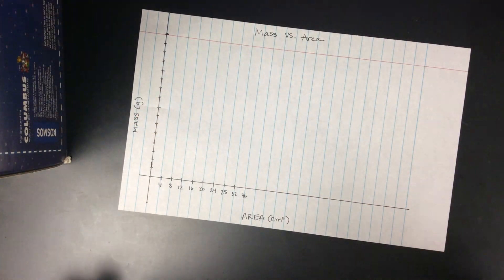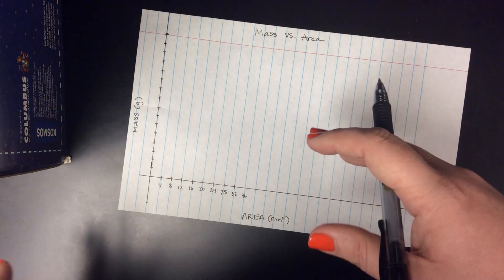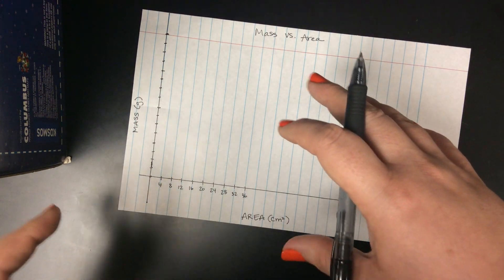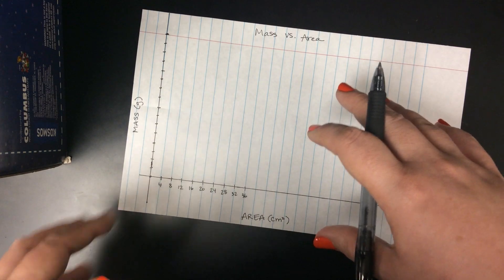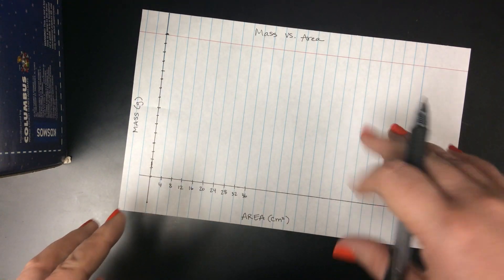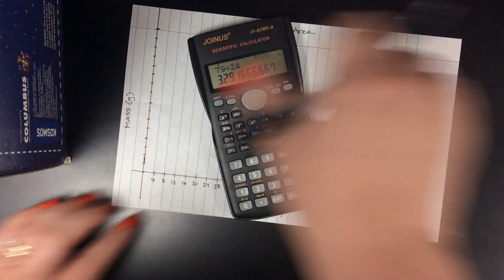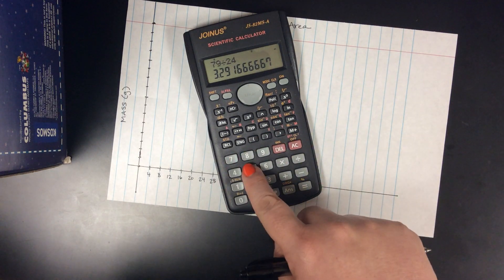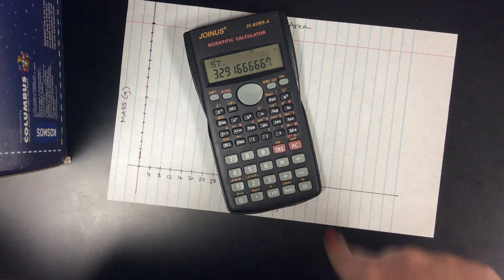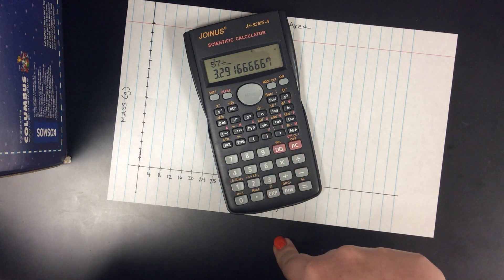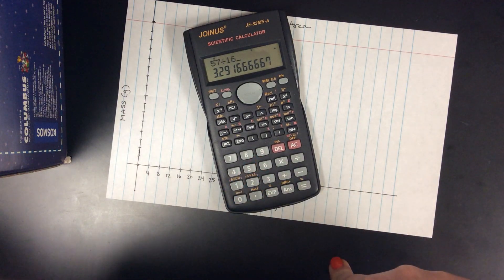And now I'll do the same thing. Go to the mass in my data chart. I'm going to find the highest mass that I have in my data chart. And let's say that my highest mass is 57 grams. So I'm going to go to my calculator, take my highest mass, divided by how many lines I have to work with.